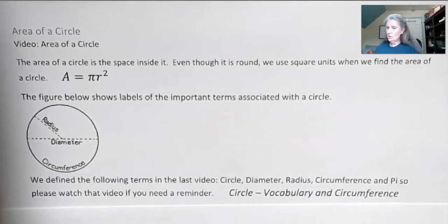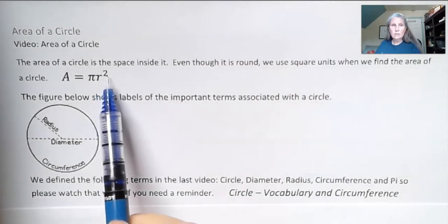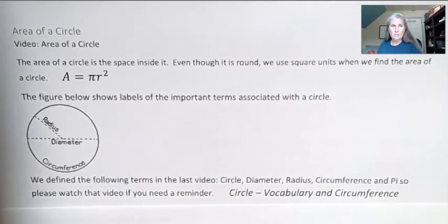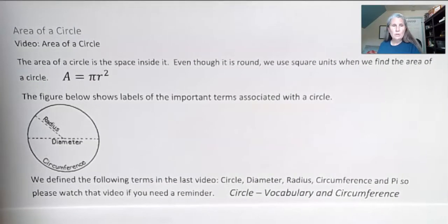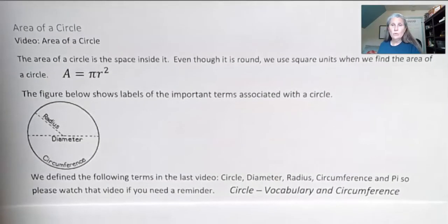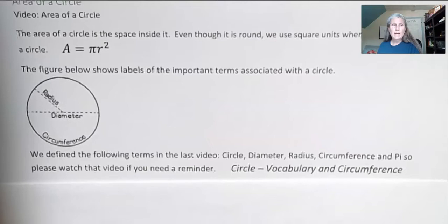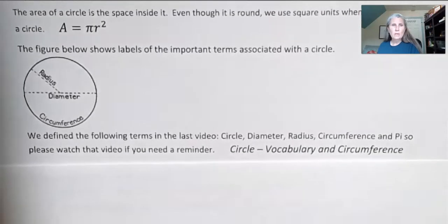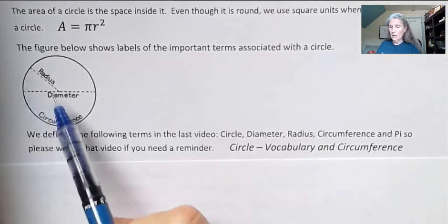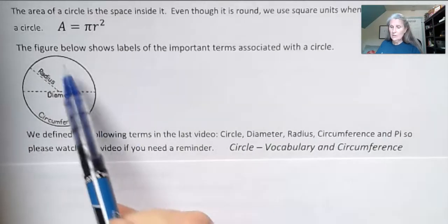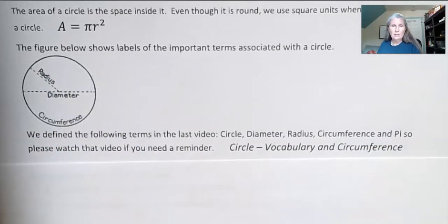And r squared stands for the radius to the second power, and pi is an approximation. The figure below labels all the important terms associated with the circle. And the main ones that I'm going to be using today are radius and diameter.